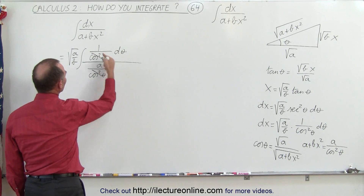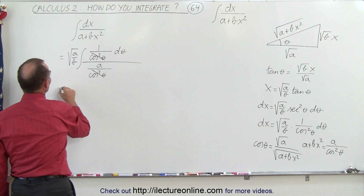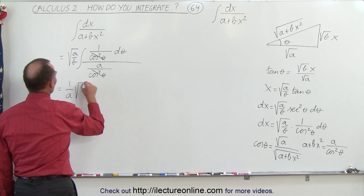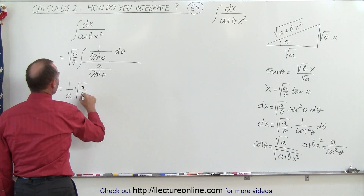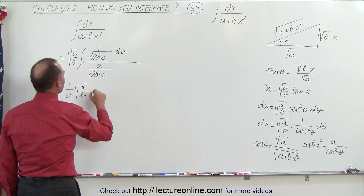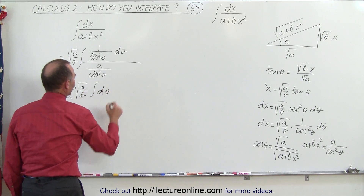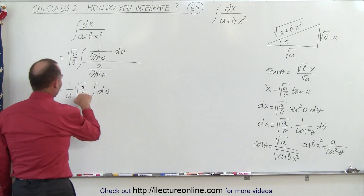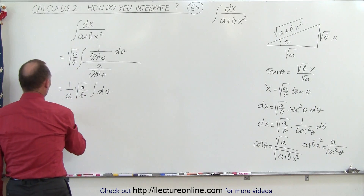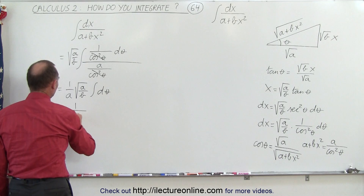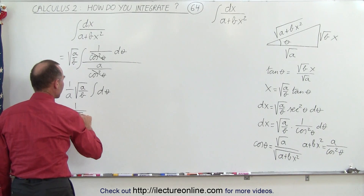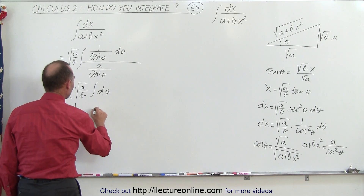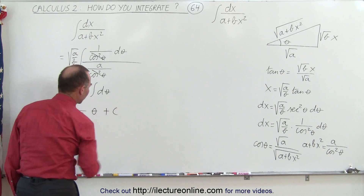Now we have 1 over a, which can go outside the integral sign. So this becomes 1 over a times the square root of a over b, times the integral of d theta. That's a really easy integral. We can simplify this as 1 over the square root of ab, and here we have the integral of d theta, which is theta, plus a constant of integration.